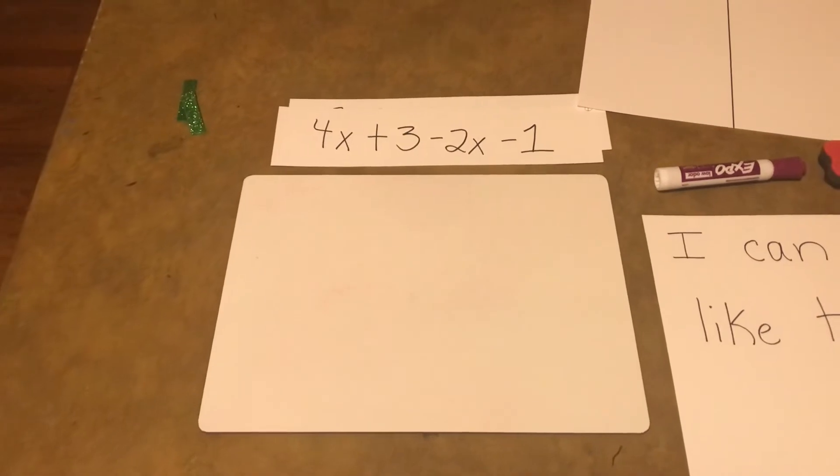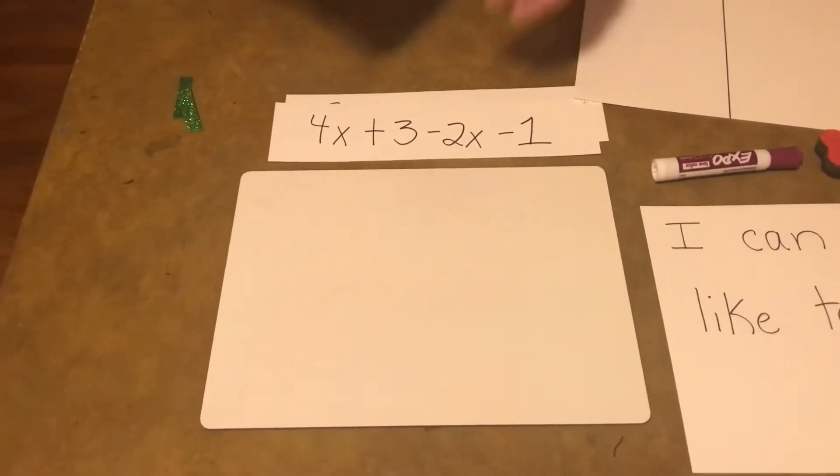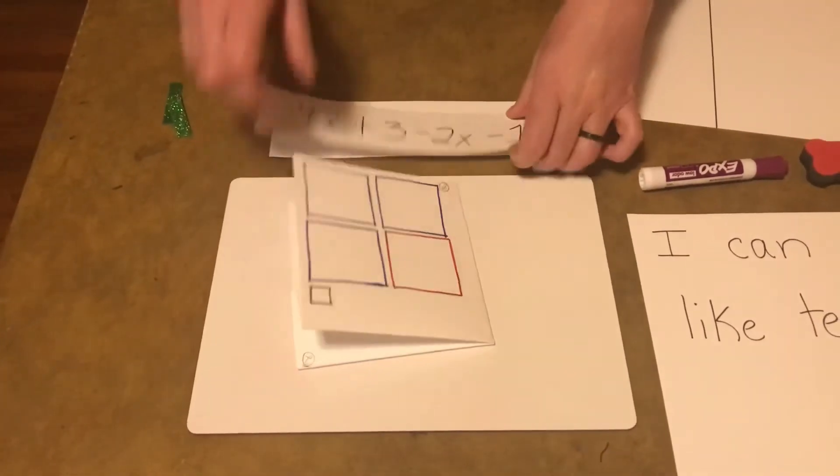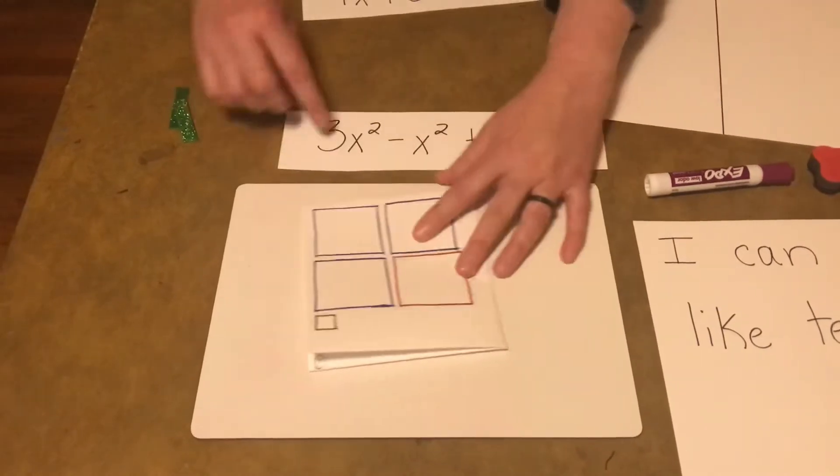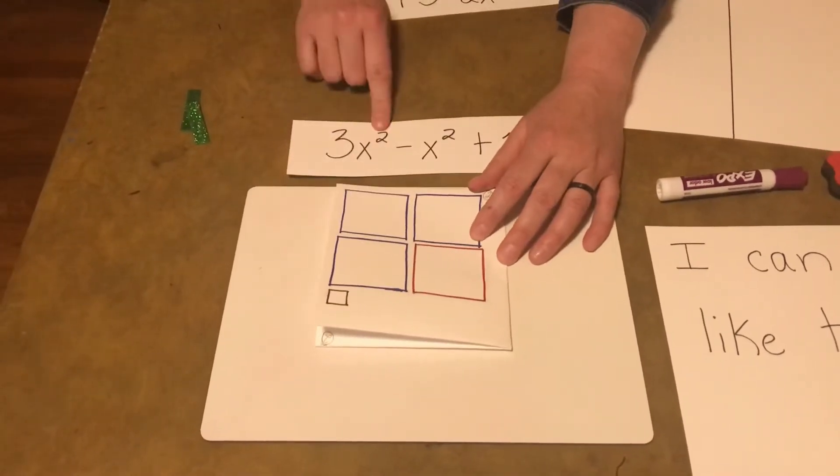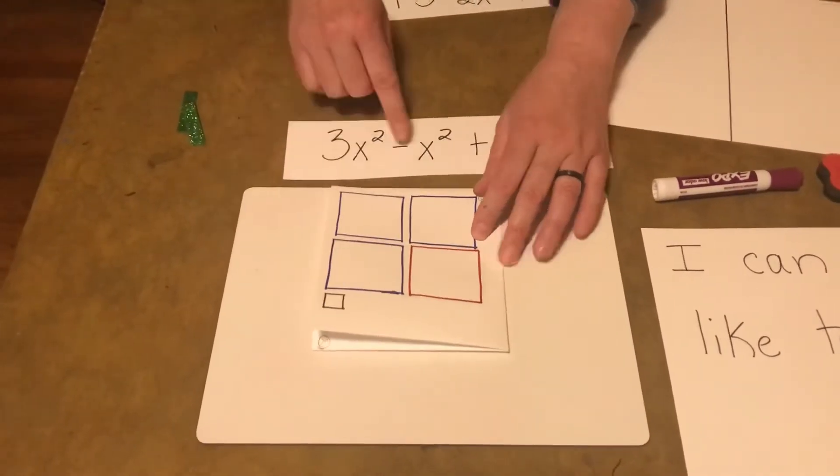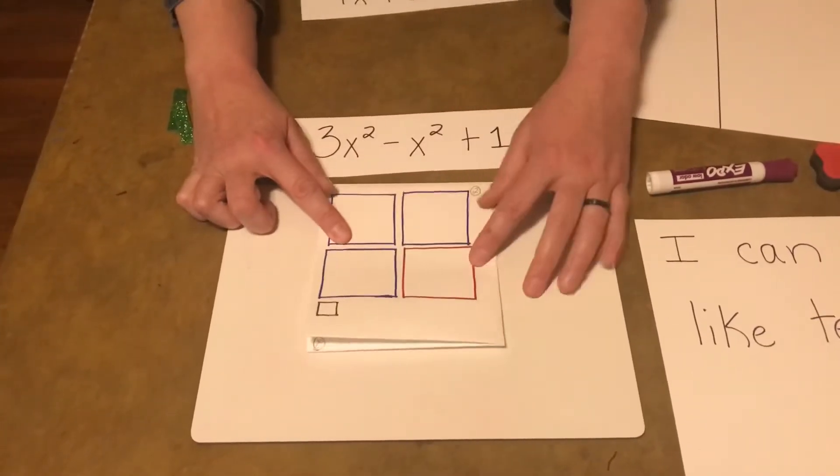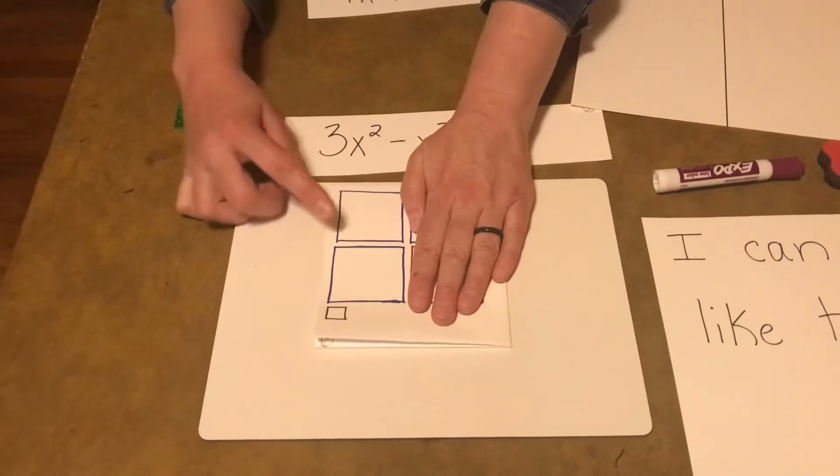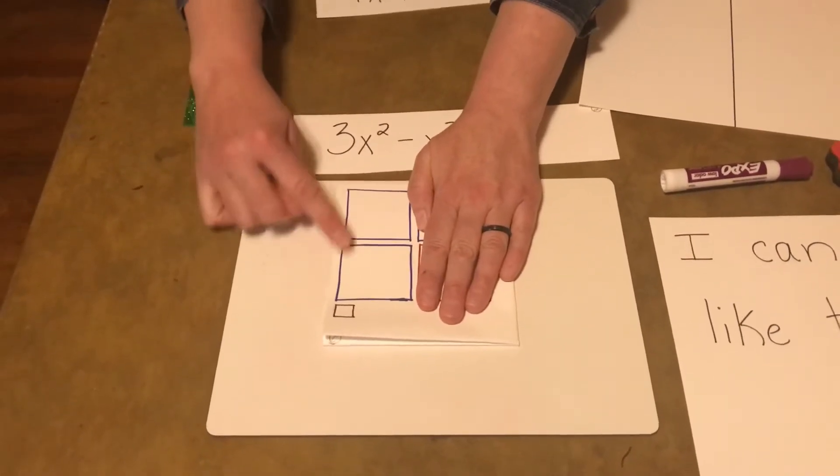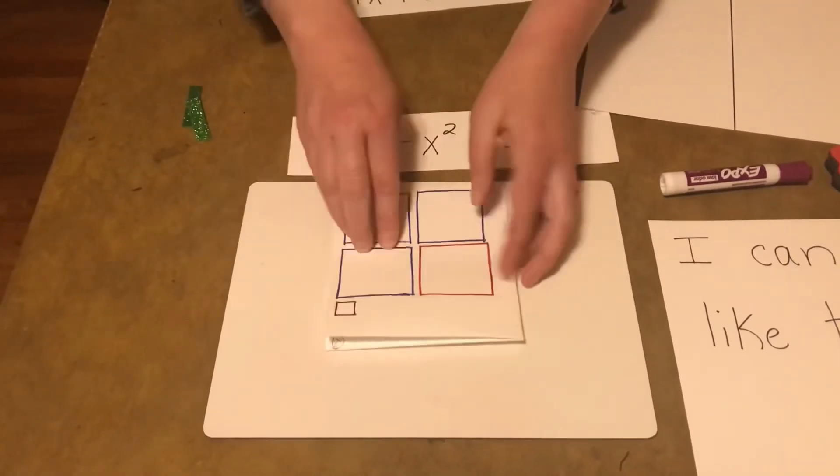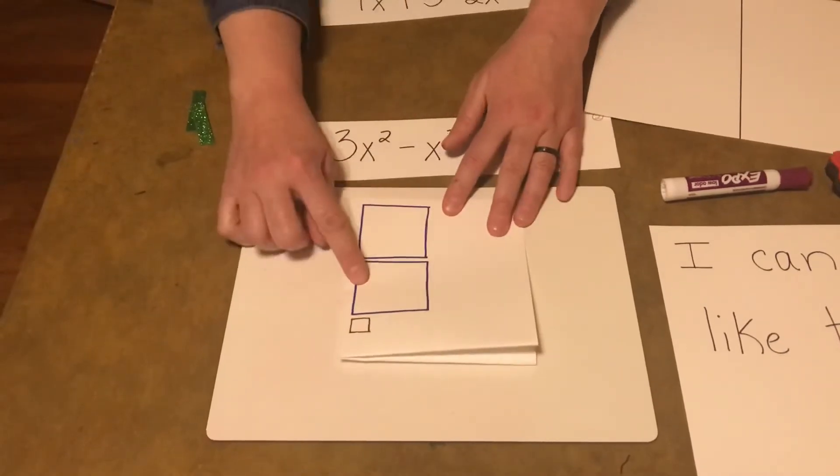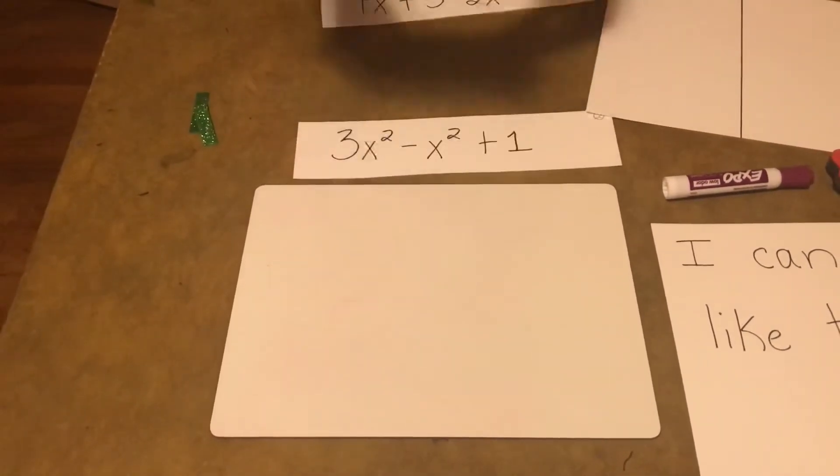And let's try the pictures with this one. So we had 3 of those blue, so 3 of the X squared. 1, 2, 3. And a negative X squared and plus 1. And so we can zero that out. We have 2X² plus 1. Let's see. 2X² plus 1.